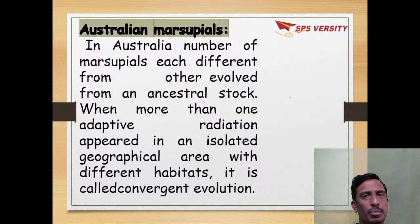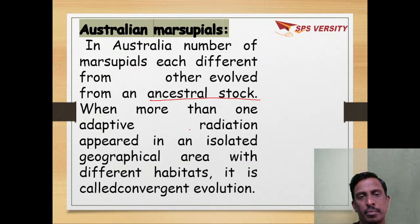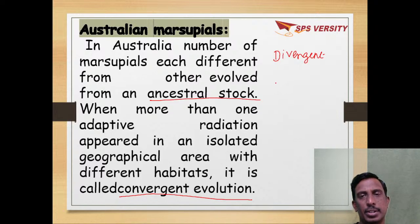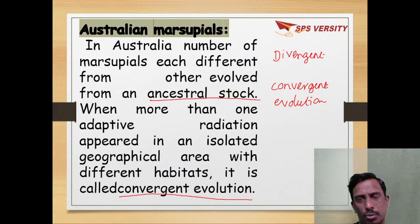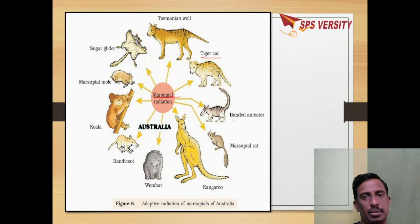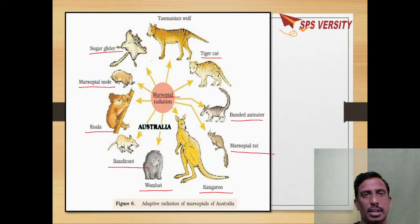Another example of adaptive radiation is Australian marsupials, which evolved from an ancestral stock. When more than one adaptive radiation occurs in a particular geographical area, it leads to convergent evolution. The marsupial radiation has given rise to different animals like tiger cat, anteater, marsupial rat, kangaroo, wombat, bandicoot, koala, marsupial mole, sugar glider, and Tasmanian wolf — all originating from one ancestral stock, an example of adaptive radiation showing divergent evolution.